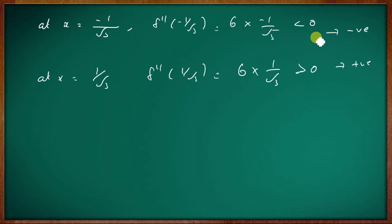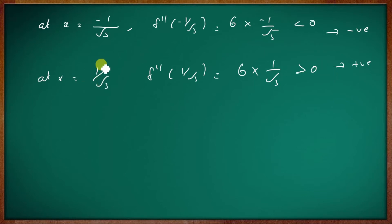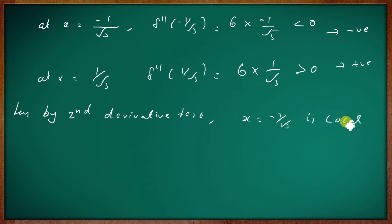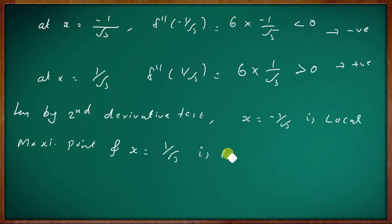f double dash of x less than zero corresponds to local maximum, so local maximum is at x equal to minus 1 by root 3. f double dash of x greater than zero corresponds to local minimum, so local minimum is at x equal to plus 1 by root 3. Hence, by the second derivative test, x equal to minus 1 by root 3 is the local maximum point and x equal to 1 by root 3 is the local minimum point.